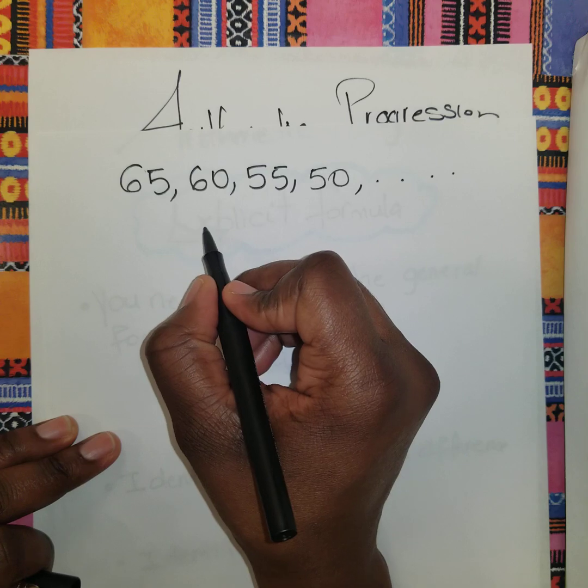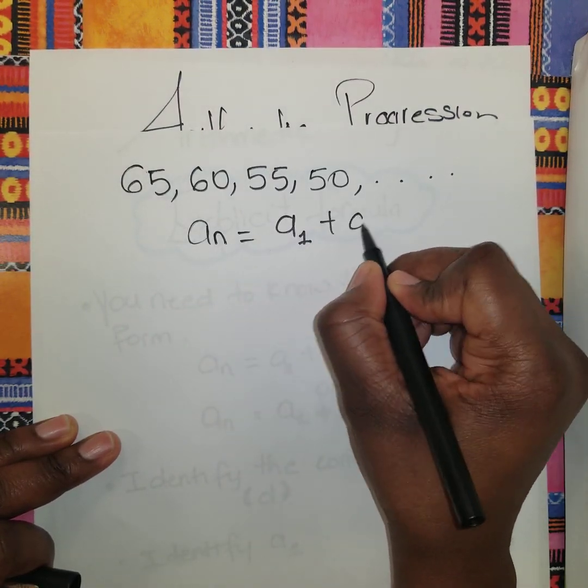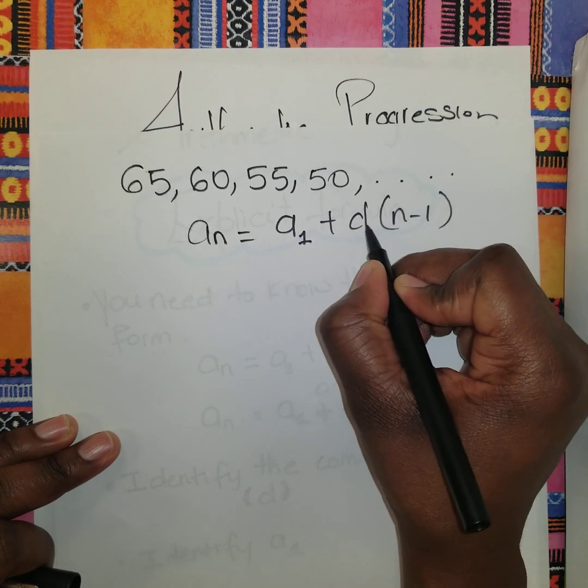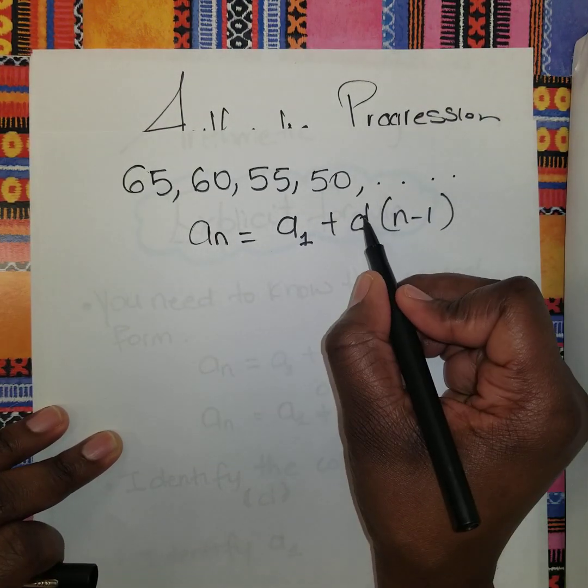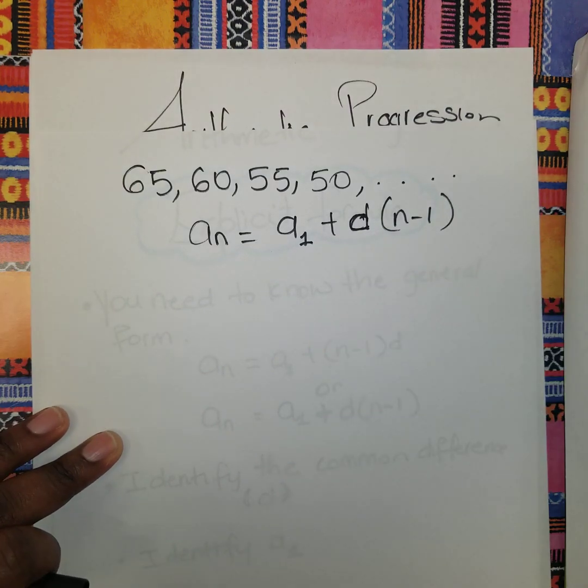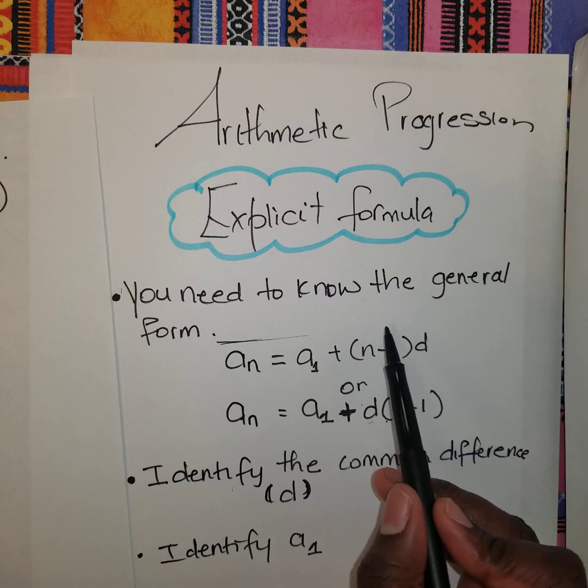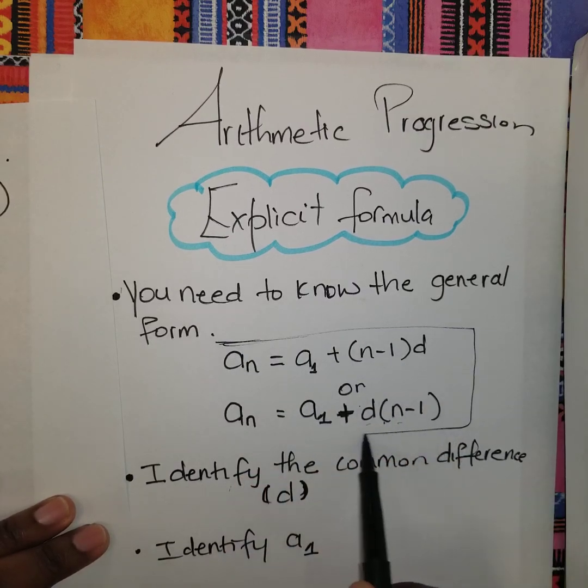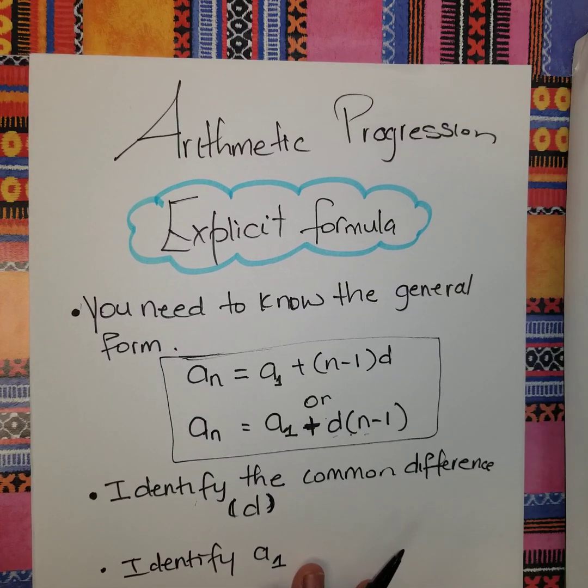So if we are given this sequence to write the explicit formula, we first need to know the general formula: a_n = a_1 + d(n-1). The d is being multiplied by the bracket, so d can be written at the front or at the back. It doesn't really matter whether it is negative or positive.